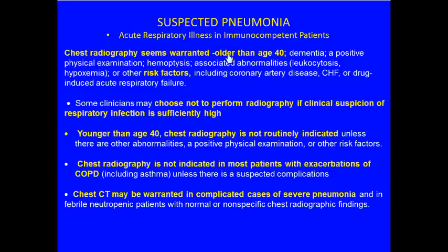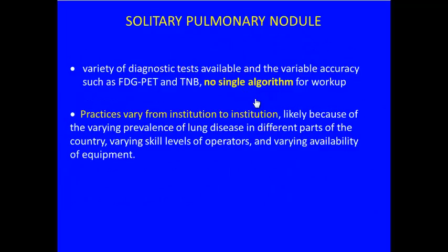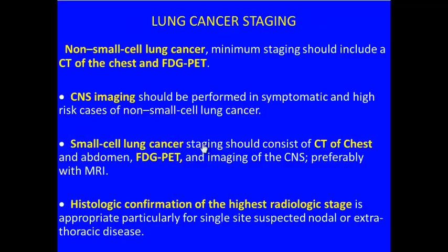For the solitary pulmonary nodule where we're worried about malignancy, there's no single algorithm — it varies from institution to institution because some places may be more comfortable with transthoracic needle biopsy (TNB) and FDG-PET (fluorodeoxyglucose PET imaging). So there can be quite a bit of variation, depending on the prevalence of disease and the skill of operators.